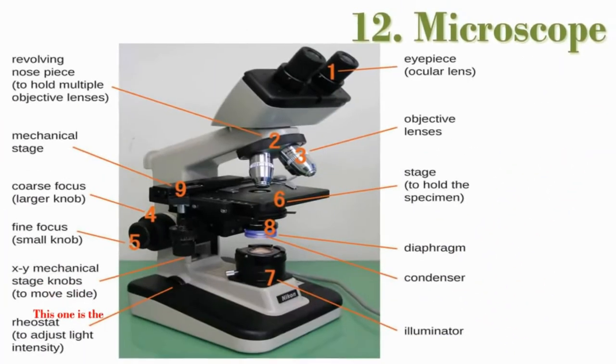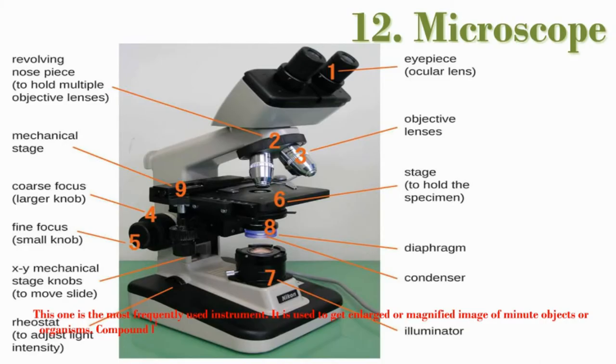Microscope. This one is the most frequently used instrument. It is used to get enlarged or magnified image of minute objects or organisms. Compound light microscope is most commonly used microscope. Note down the different components of microscope.